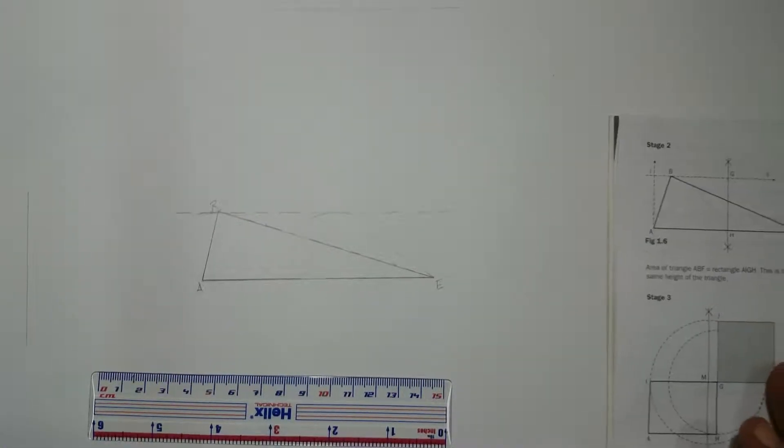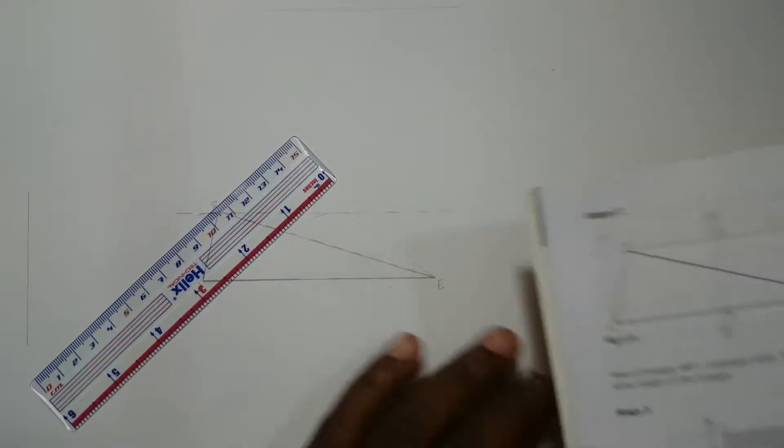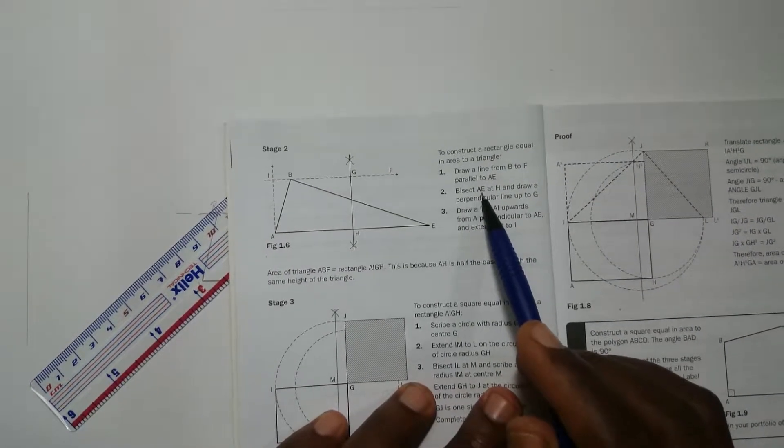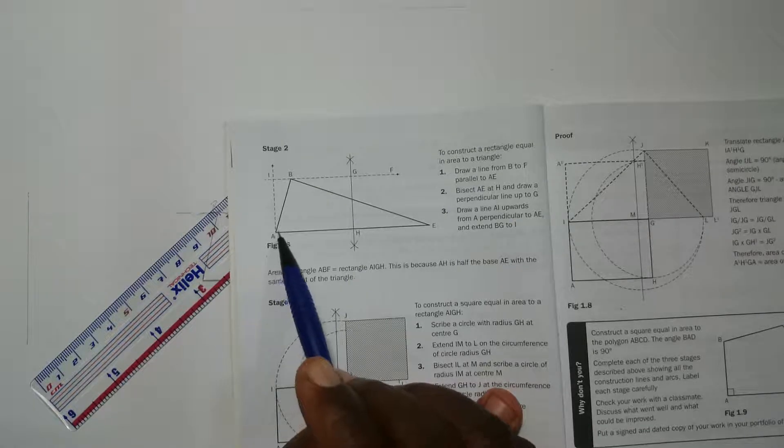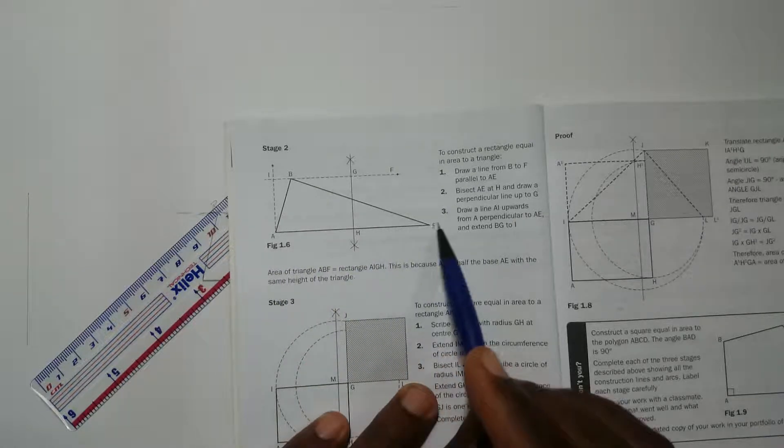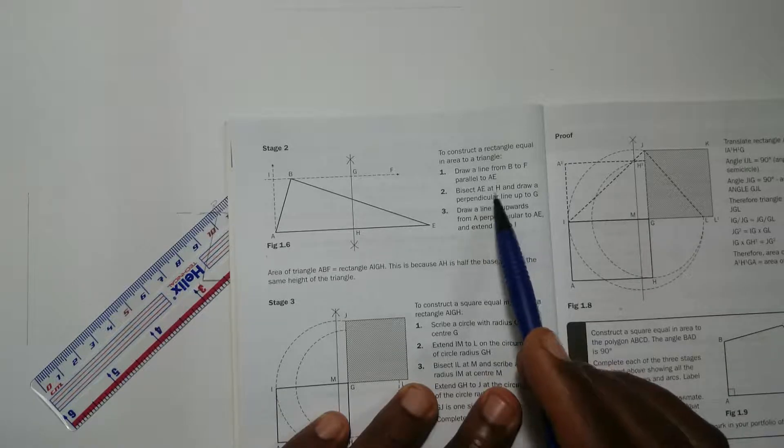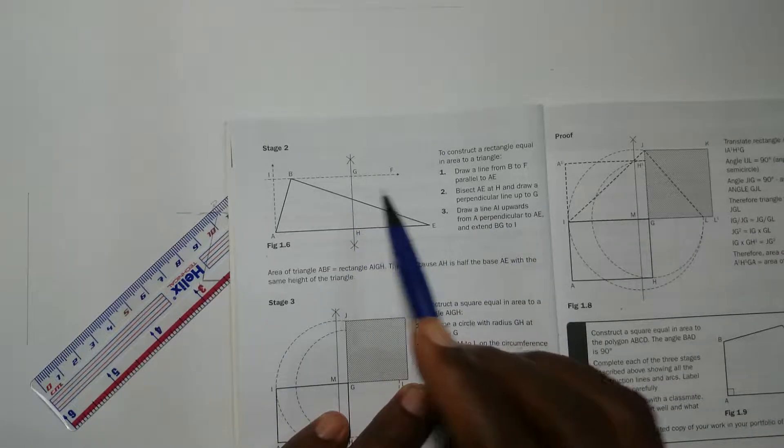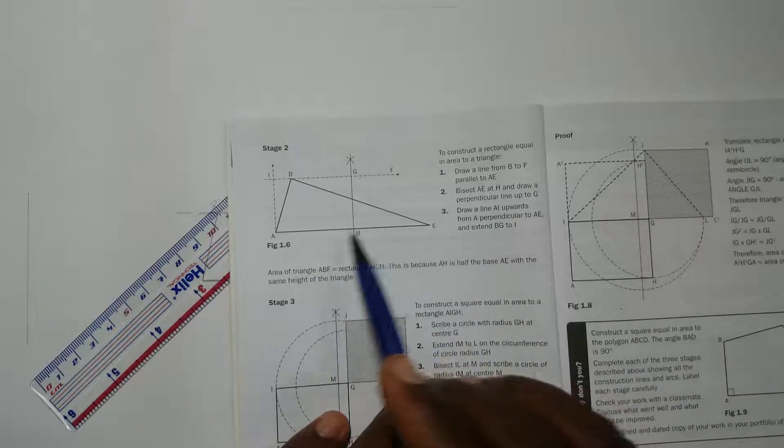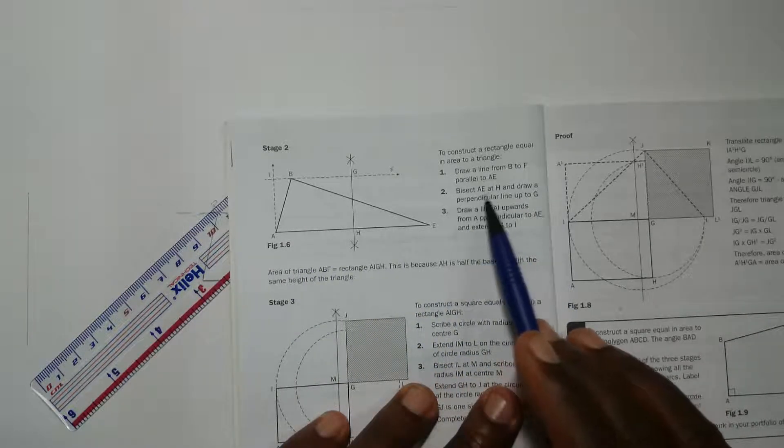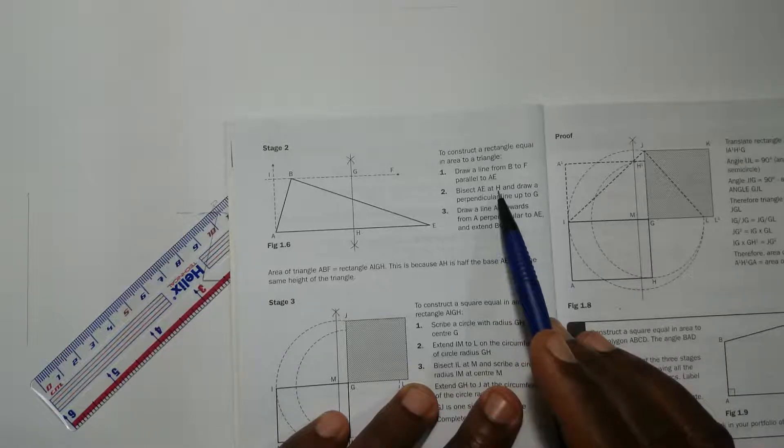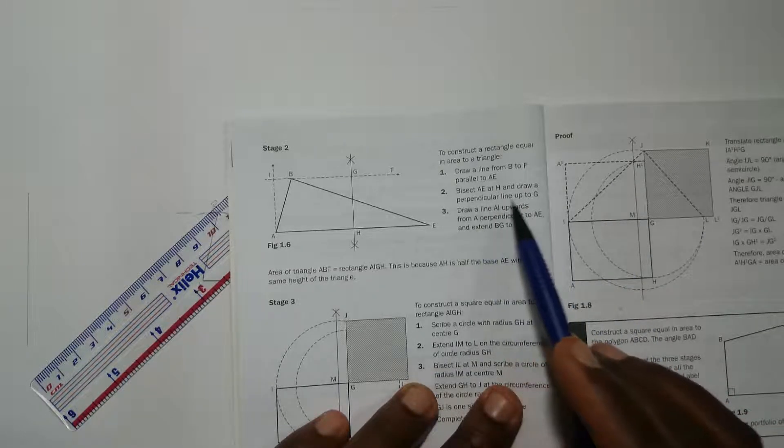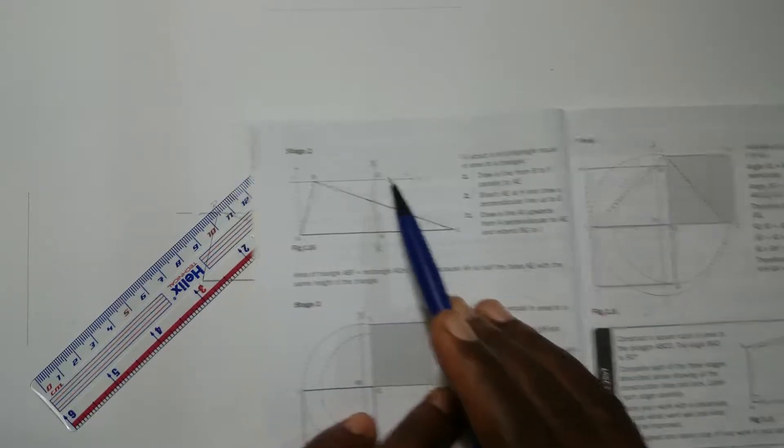The next thing we're gonna do is bisect AE. AE is the bottom baseline of the triangle. We're gonna bisect AE and create H after we've bisected AE. To bisect is to divide a line into two equal parts. So we bisect AE at H, and then draw a perpendicular line up until we meet the line that we just drawn.